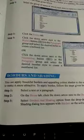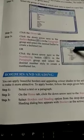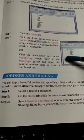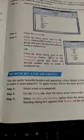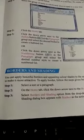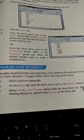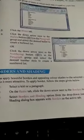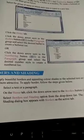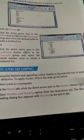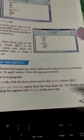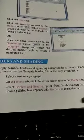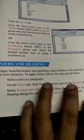Select the text or a paragraph — to select one paragraph, do so after finishing typing. On the Home tab, click the down arrow next to the Border button. After clicking this button, we will find a Border and Shading option. Select the Border and Shading option from the drop-down list. The Border and Shading dialog box appears with Borders as the active tab.